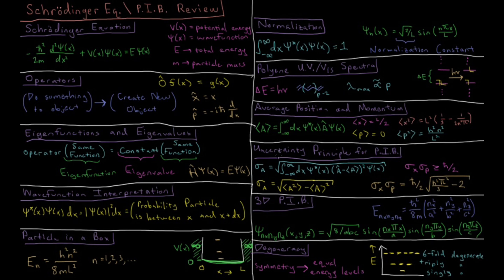This is very relevant for the uncertainty principle because we know for the uncertainty principle that the uncertainty in x times the uncertainty in momentum must be greater than or equal to h bar over 2.